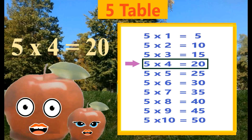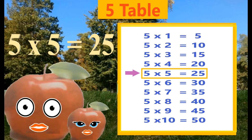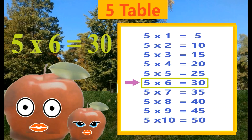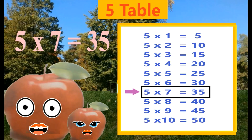Five fours are twenty. Five fives are twenty-five. Five sixes are thirty. Five sevens are thirty-five.